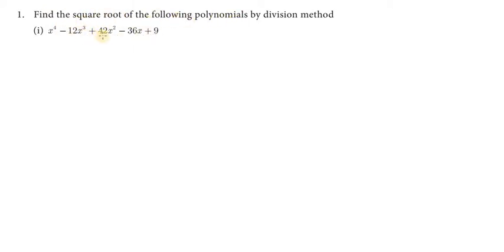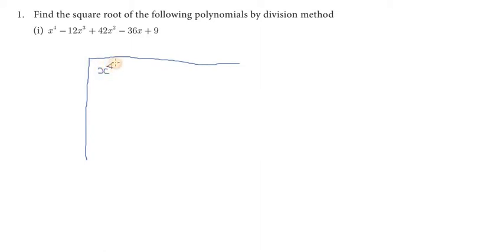In this polynomial, we find the square root by the division method. A normal square root is a normal square root model, but for a polynomial it is a little different. First, we check and choose the order of all terms. The terms start with powers 4, 3, 4, 3, 3, 4, 2, and so on.